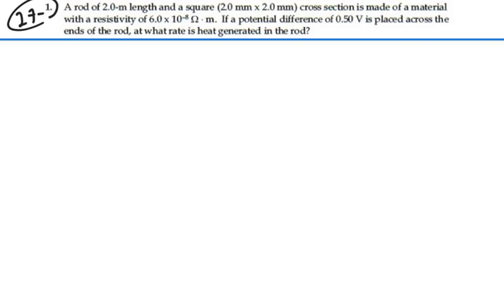First, what do they mean by rate of heat generated? If you have a rate of something, you're thinking about something per time. In this case, it would be heat per time. Heat is energy, so we're looking to find the energy per time generated in the rod. Well, power is energy per time, so we want to know the power in the rod.